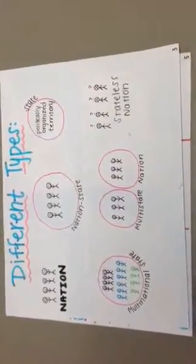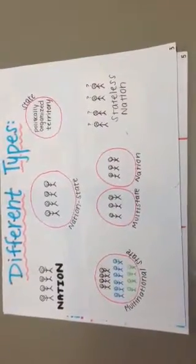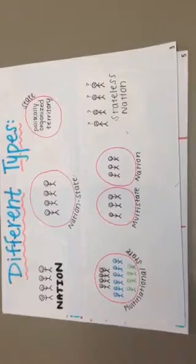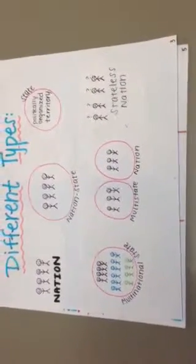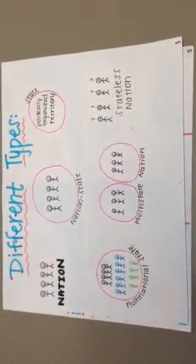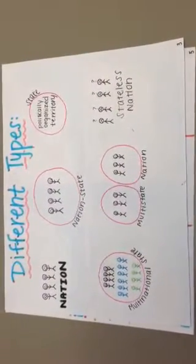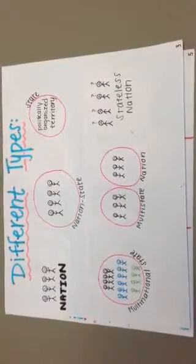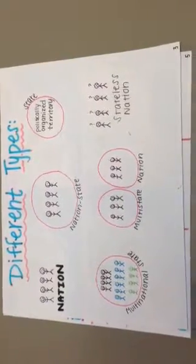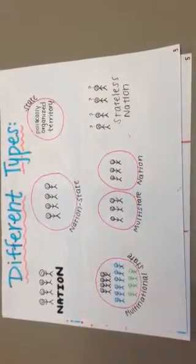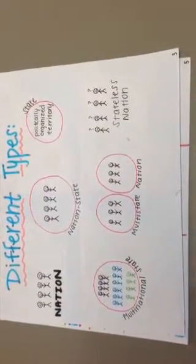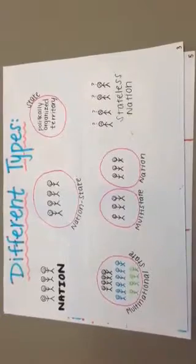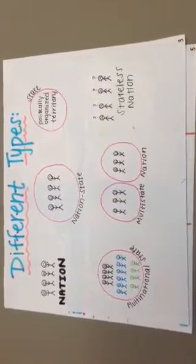There are different types of countries. First, there's a nation, which is a group of people with a common culture. Then there's a nation-state, which is a nation that occupies its own state. And then there's a state, which is a politically defined territory that has its own government.